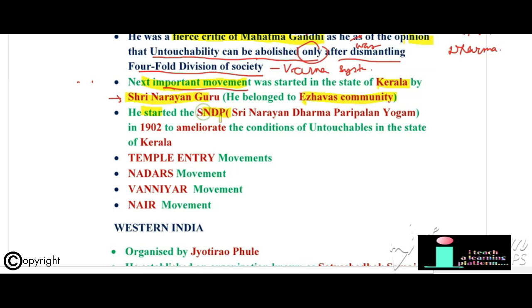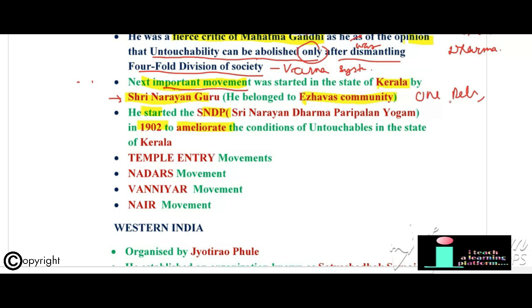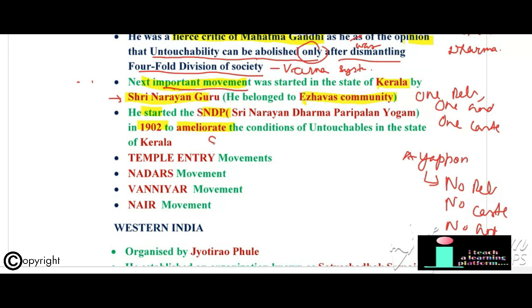An important movement in Kerala was started by Sri Narayana Guru, who belonged to the Ezhava community. He started the SNDP — Sri Narayana Dharma Paripalan Yogam — in 1902 to ameliorate the condition of untouchables in Kerala. He led a lifelong struggle against upper-caste domination and coined the slogan 'One religion, one caste, one God for mankind.' His disciple Sahadaran Ayyappan changed it to 'No religion, no caste, no God for mankind.'